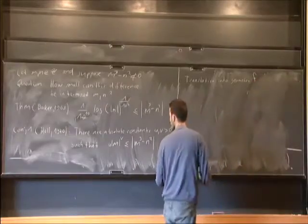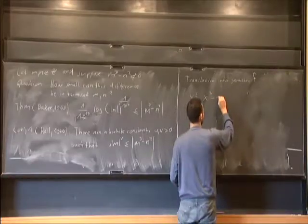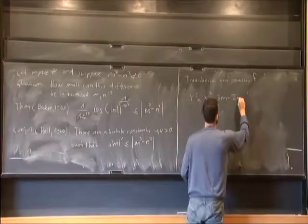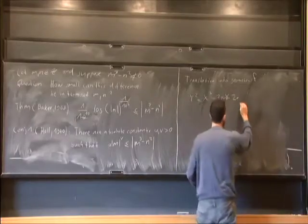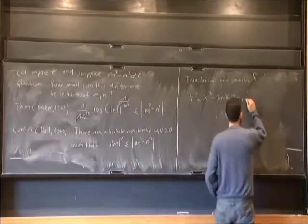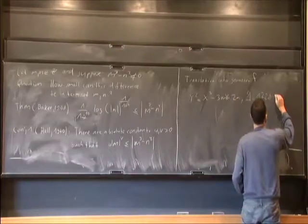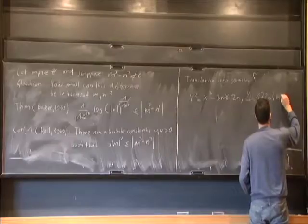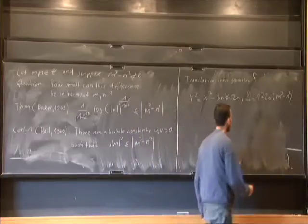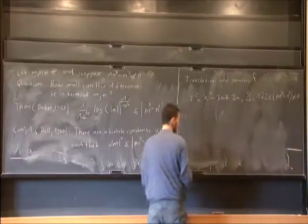Consider the following curve: y² = x³ + (2^m - 3^n)x². This is a Weierstrass equation, and I can compute the discriminant. The discriminant Δ = -2^8(2^m - 3^n)³. By our assumption, this discriminant is non-zero, so this is an elliptic curve over Q.